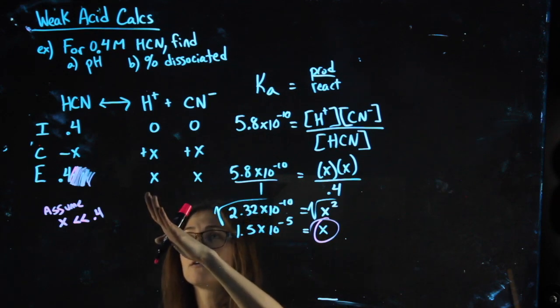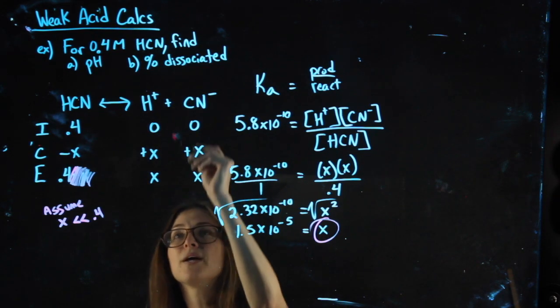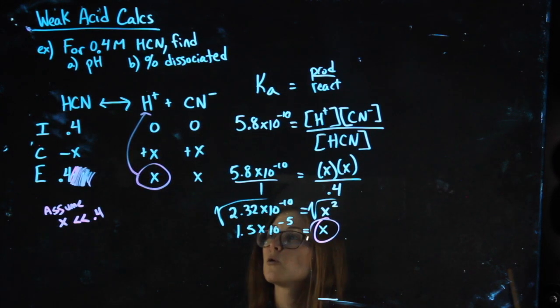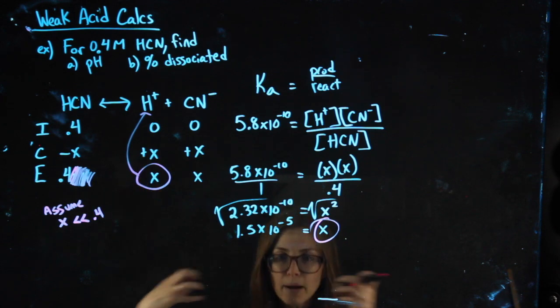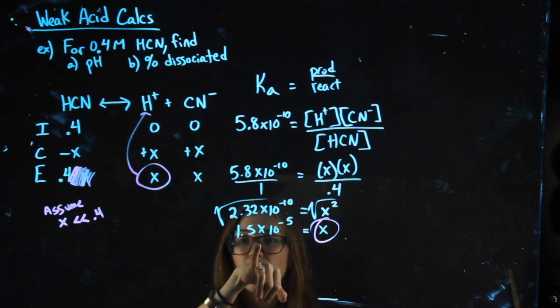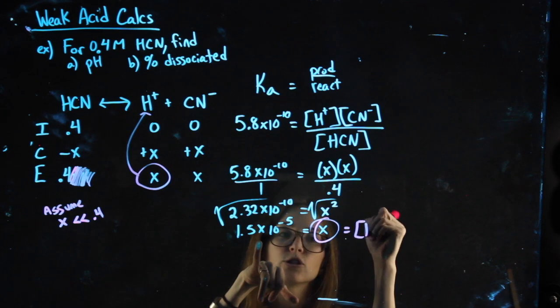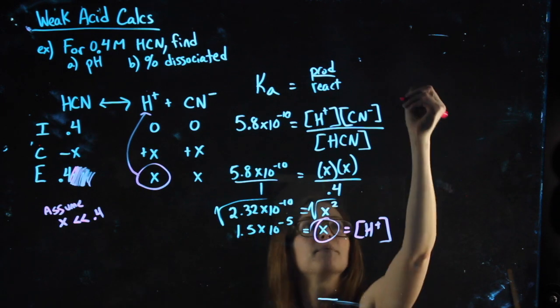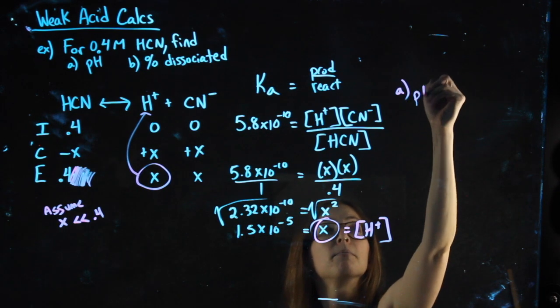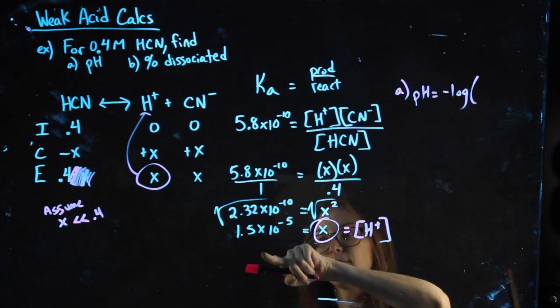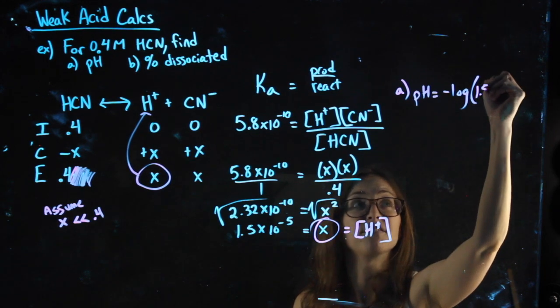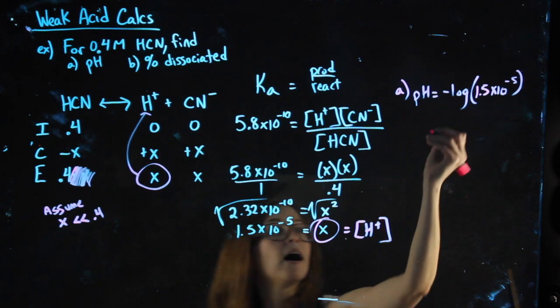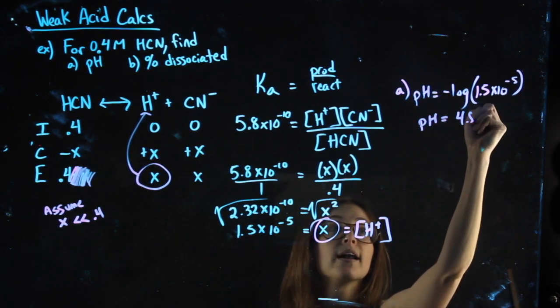Well, let's think about what x represents. Go back to my ICE chart. x represents a lot of things, but the thing we care about, x represents my H+. So once I have this HCN, it automatically dissociates a little bit, and now I know how much H+, what concentration of H+, I have in this solution. So for part A, I want the pH. pH is negative log of my H+, of 1.5 times 10 to the negative 5th. I negative log that, and I get my pH equal to 4.82.